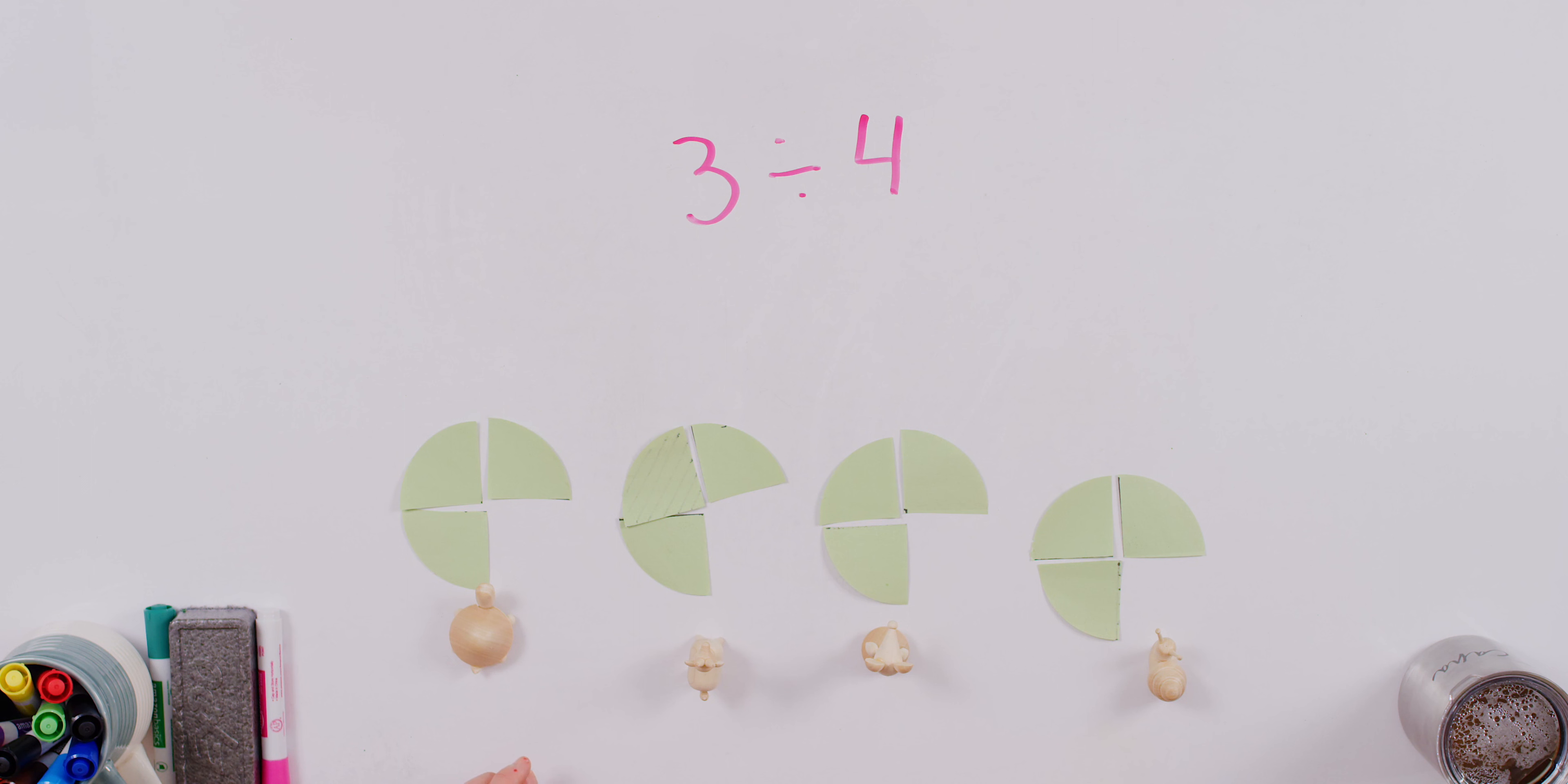Now, were we able to distribute the three cakes evenly among four friends? We were. And how much cake does each friend have? One, two, three. One, two, three, and so on. Three out of four.